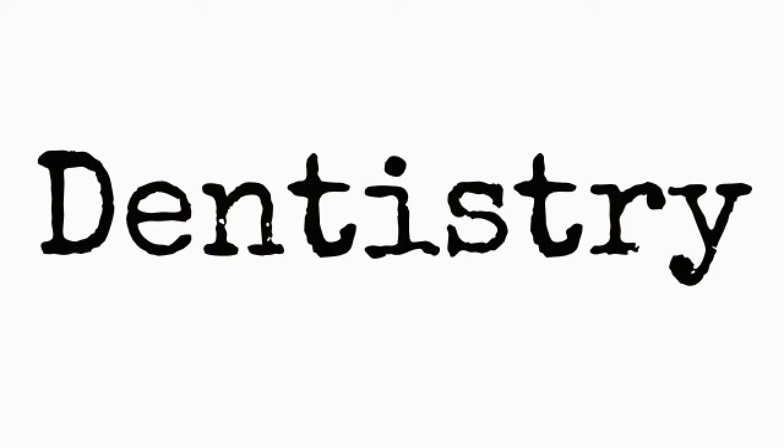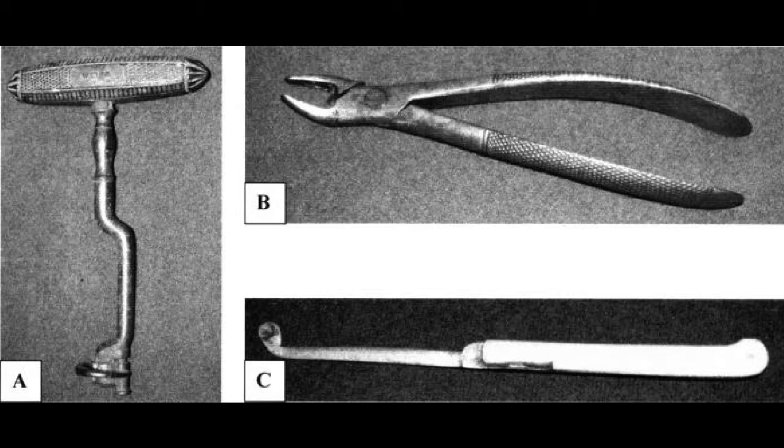Surgeons at this time were also responsible for dentistry. Lack of hygiene among soldiers and sailors led to disease and poor dental condition. Surgeons would use tooth forceps to pull rotten teeth. Gum lancets and punches were used to drain gum boils as well as to induce bleeding in the mouth.